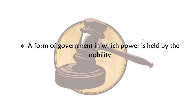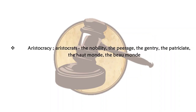A form of government in which power is held by the nobility — it's aristocracy. The aristocrats are also called the nobility, the peerage, the gentry and the hoi polloi. These are synonyms for aristocrats.